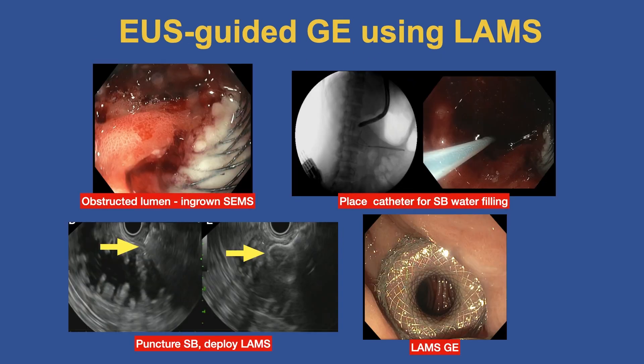Using the LAMS: here is a patient with an ingrown SEMS, completely blocked — couldn't eat, nausea, vomiting, just miserable. We place our catheter for filling of the small bowel because we need to see it well; the water makes things black so we can see everything clearly. Then we puncture the small bowel with our hot delivery system — which I also developed — allowing a one-step entry into the small bowel with immediate deployment of the LAMS. Then we deploy the LAMS, and here you can see the gastroenterostomy.